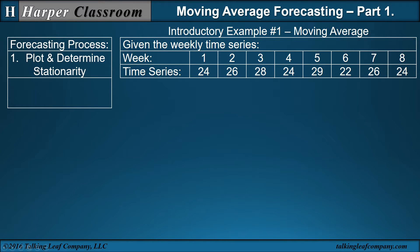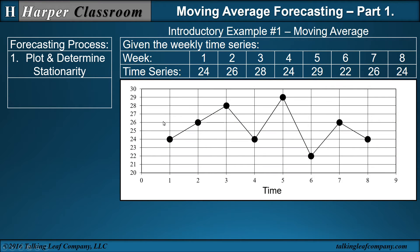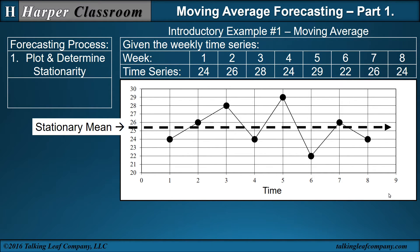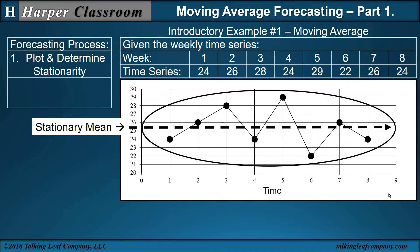The first step is to plot and determine stationarity. When we look at the time series over the plot, stationarity refers to some stationary mean. When we look at the overall nature of the time series, we see that it's level around that stationary mean, so therefore the time series is referred to as stationary.